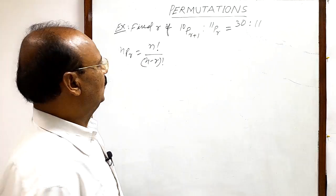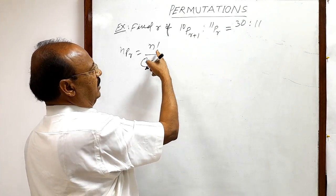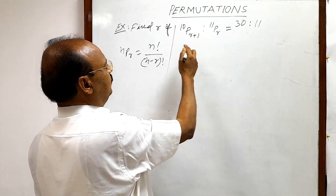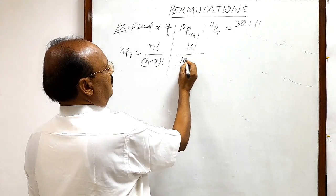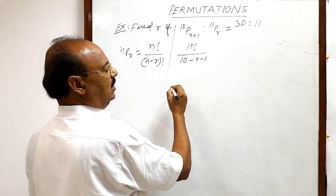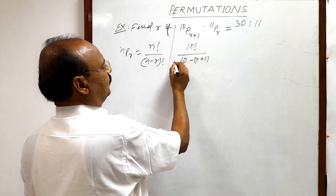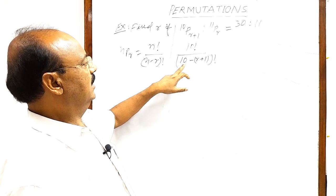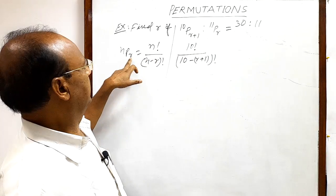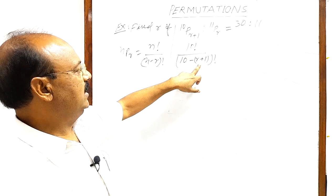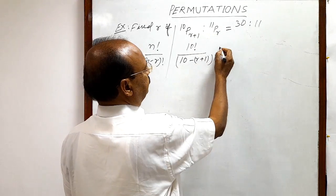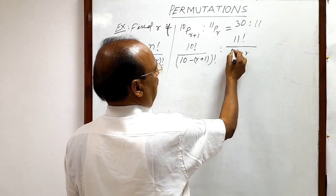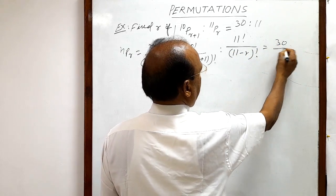With the help of this formula, we can write 10PR+1 in this form. N is 10 and in place of R we are getting R plus 1. So using this formula, we get 10 factorial divided by (10 minus R minus 1), which simplifies to 10 factorial over (N minus R) factorial with R+1 substituted in place of R. Is to 11PR means 11 factorial upon (11 minus R) factorial. This is equal to 30 by 11.